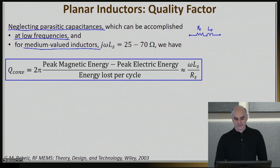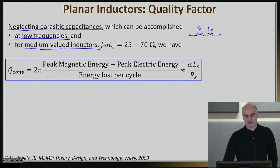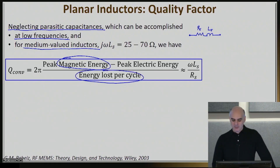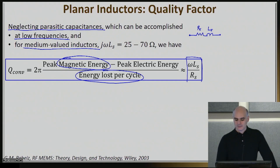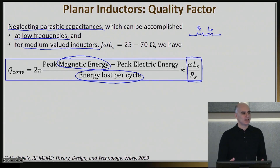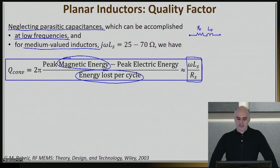The Q of this RL inductor is defined by calculating the magnetic energy being stored, dividing by the power being lost. This gives the very famous equation: Q equals omega Ls divided by Rs. If you ask almost any RF engineer for the Q of an inductor, that is the answer they will give you — omega L over R.